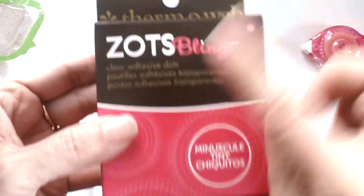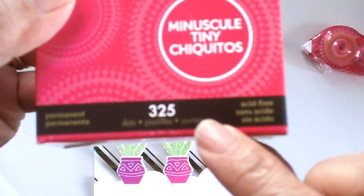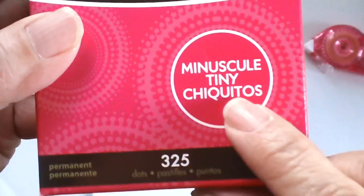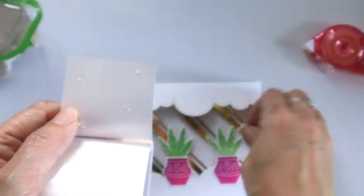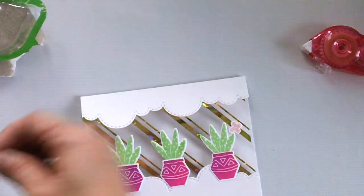And now I'm going to use the Zotz bling minuscule glue dots. They are so tiny and they're perfect to adhere those tiny embellishments on your project.